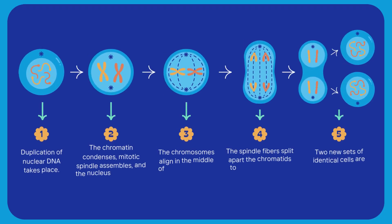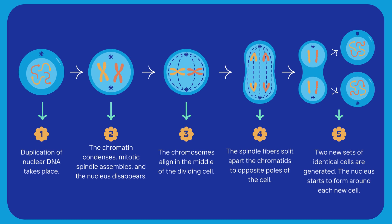1. Duplication of nuclear DNA takes place. 2. The chromatin condenses, the mitotic spindle assembles, and the nucleus disappears. 3. The chromosomes align in the middle of the dividing cell. 4. The spindle fibers split apart the chromatids to opposite poles of the cell. 5. Two new sets of identical cells are generated.